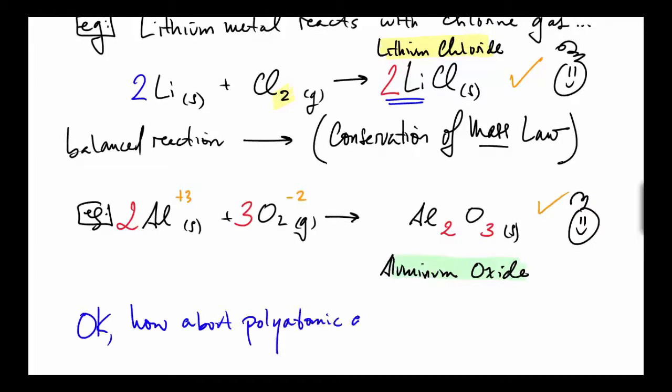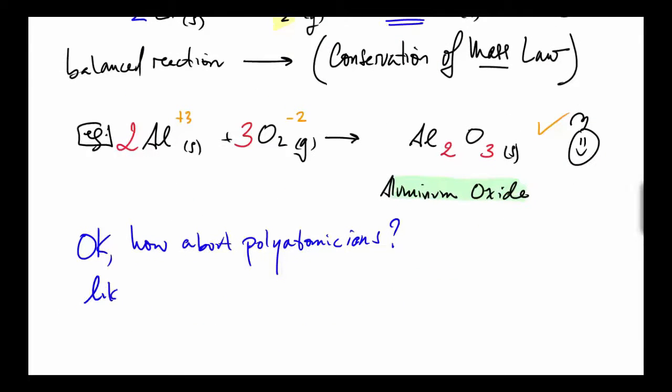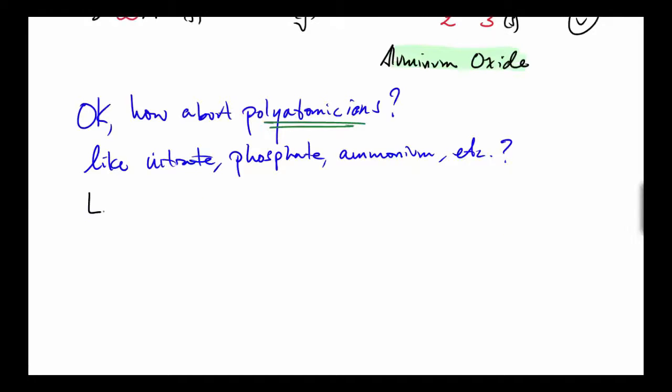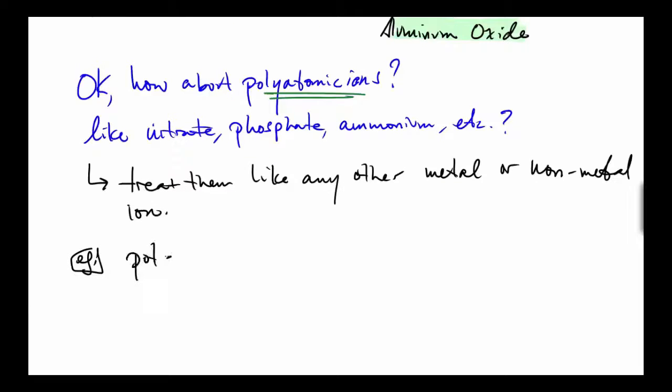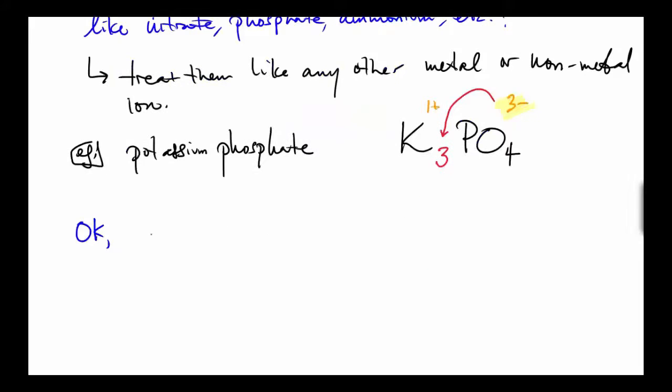How about polyatomic ions like nitrate, phosphate, ammonium, etc.? Well, here's the trick: just treat them like any other metal or nonmetal ion and you'll be just fine. Here's an example: potassium phosphate. Phosphate is a minus three charge, potassium is plus one. You'll need three of those potassiums, therefore put a three and you're done.